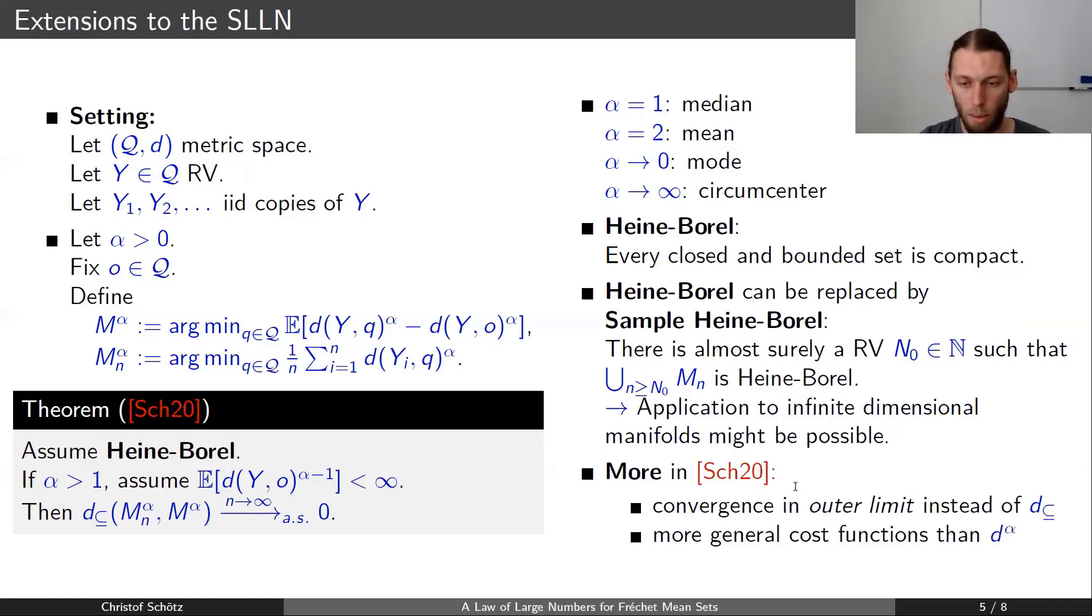And lastly, I want to mention that in the paper there are also further alternatives and generalizations. For example, you can show these kind of limit theorems also in outer limit instead of in the subset distance. And there are also more general cost functions than d to the alpha that are considered in the paper.